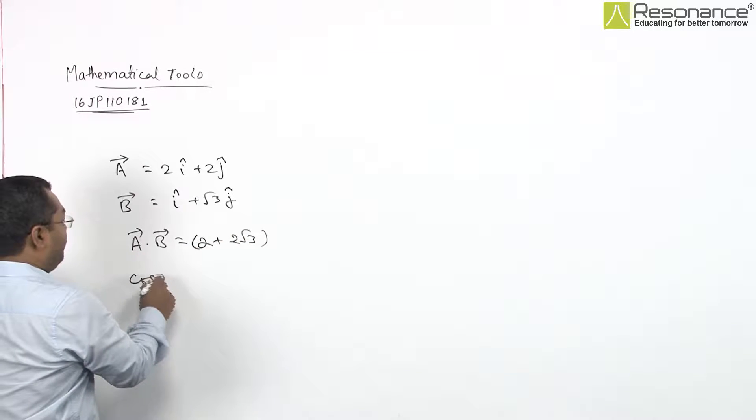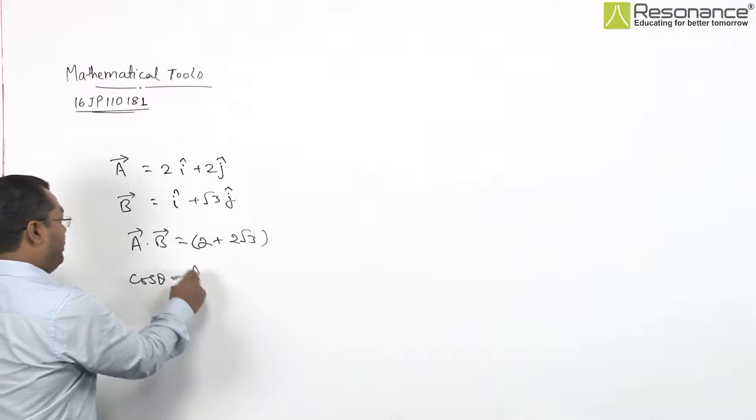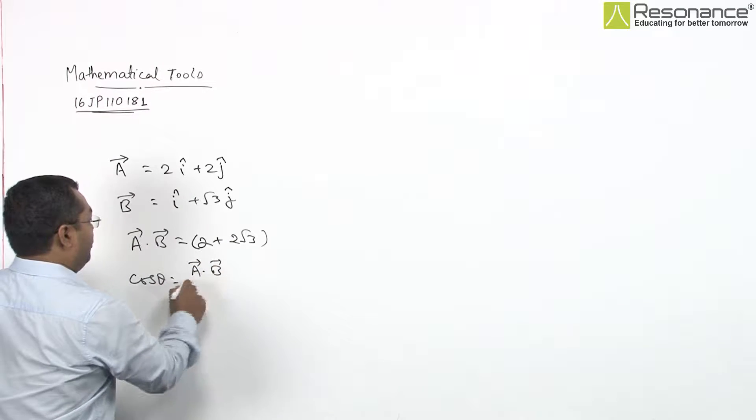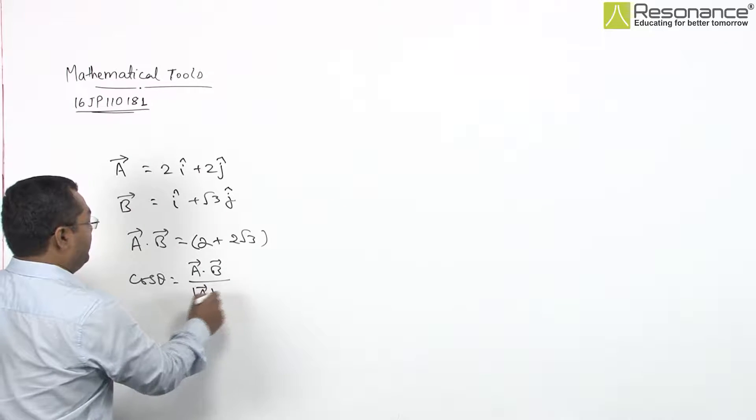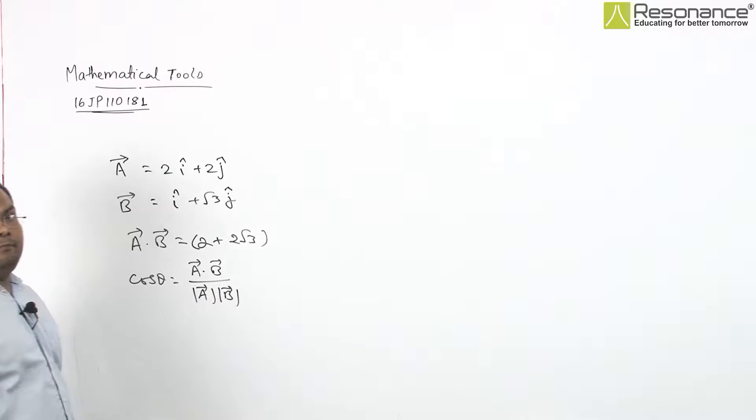From formula, cos theta will be A dot B upon modulus of vector A multiplied with modulus of vector B.